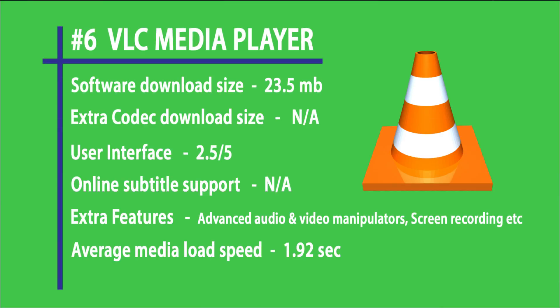Moving on to our sixth position, we have Media Player Classic. It's like the old player but has developed a lot. Software is around 23.5 to 24 MB, no extra codecs to download, and the user interface is okay but not catchy. It has no online subtitle support. Main features include plugin support, advanced audio and video settings, and screen capture. Average media load speed is 1.92 seconds, which is really impressive.